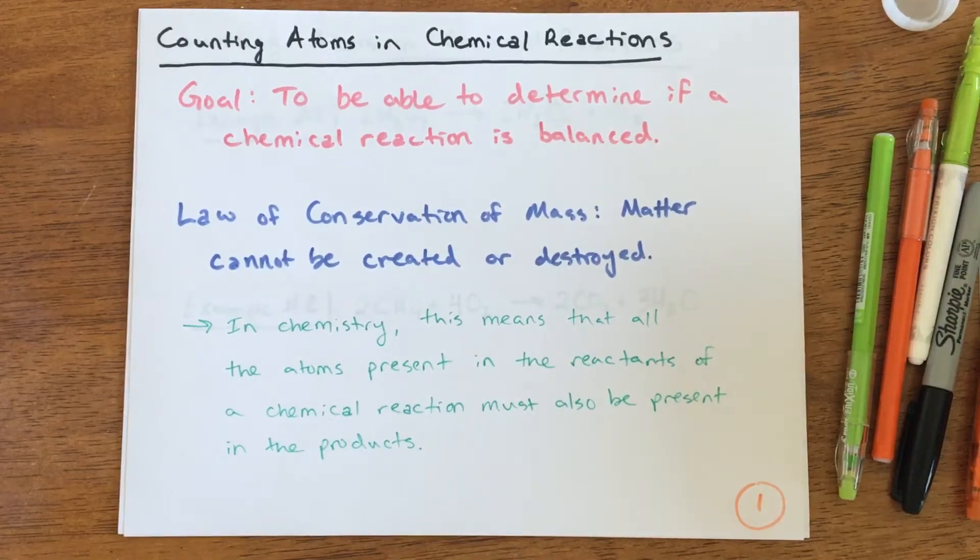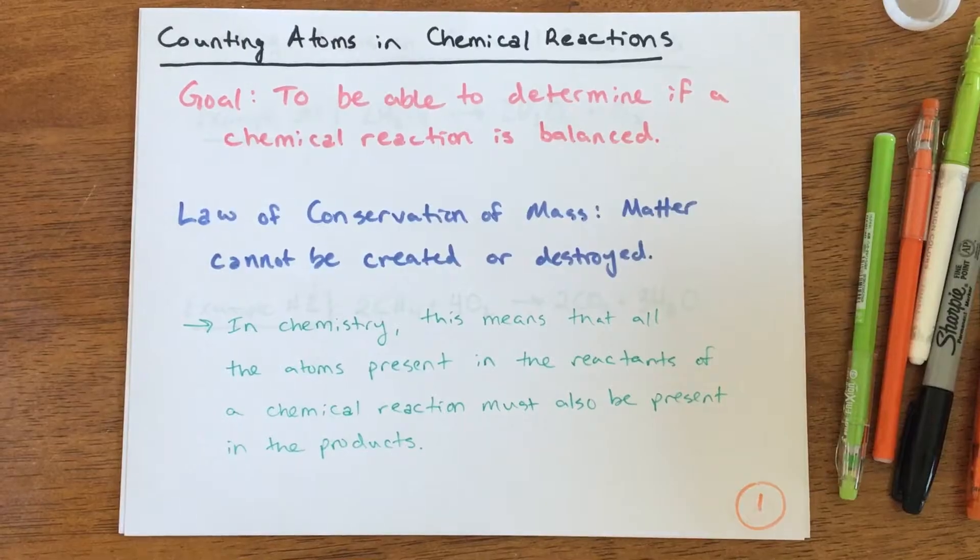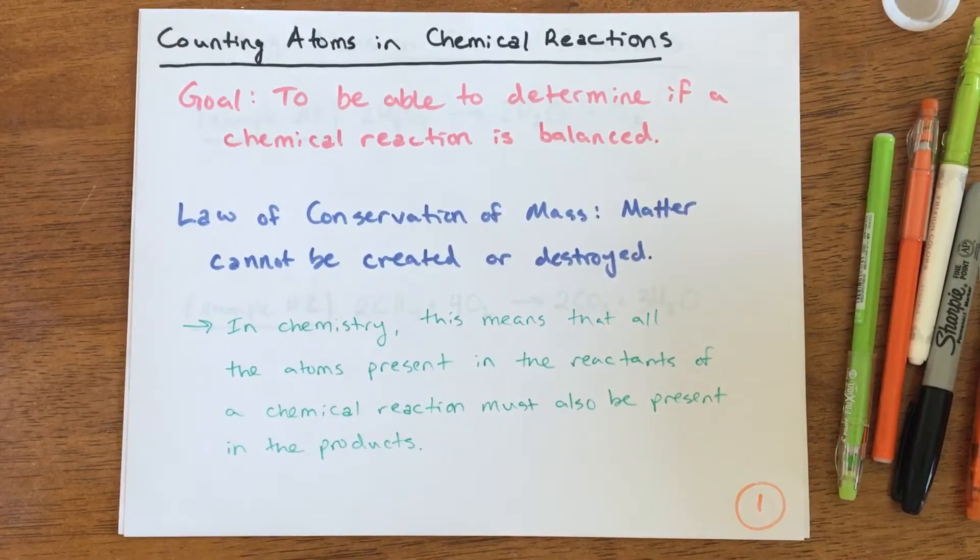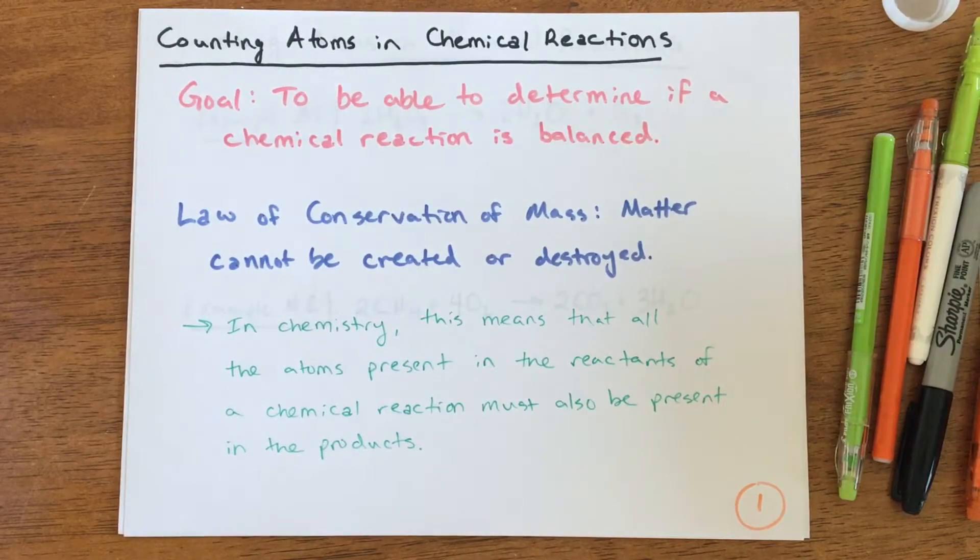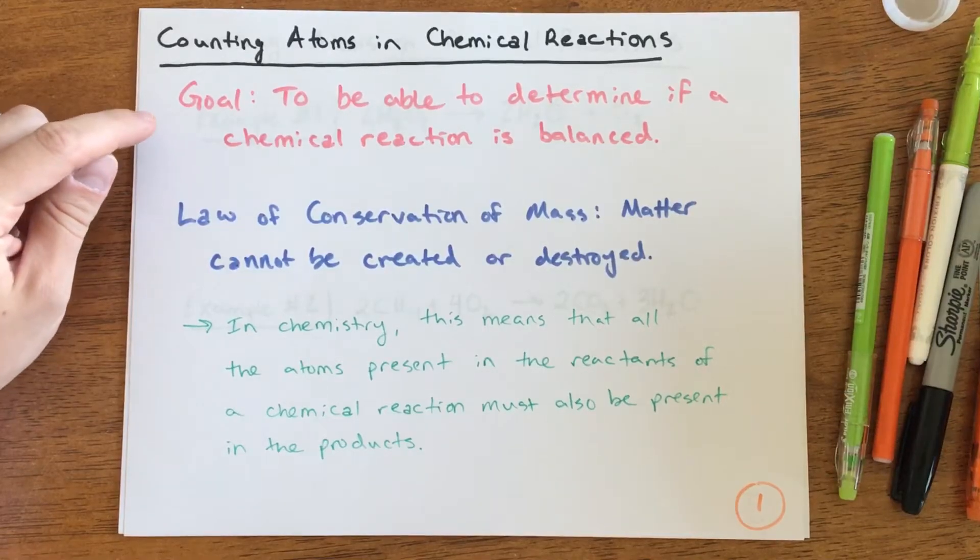Hello science students. Now that we've learned a little bit about chemical reactions, what the reactants are, what the products are, how to read a chemical reaction equation, now we're going to start talking about counting the atoms in chemical reactions to prepare ourselves for balancing chemical reactions. The goal today is for you to be able to tell or determine if a chemical reaction is balanced.